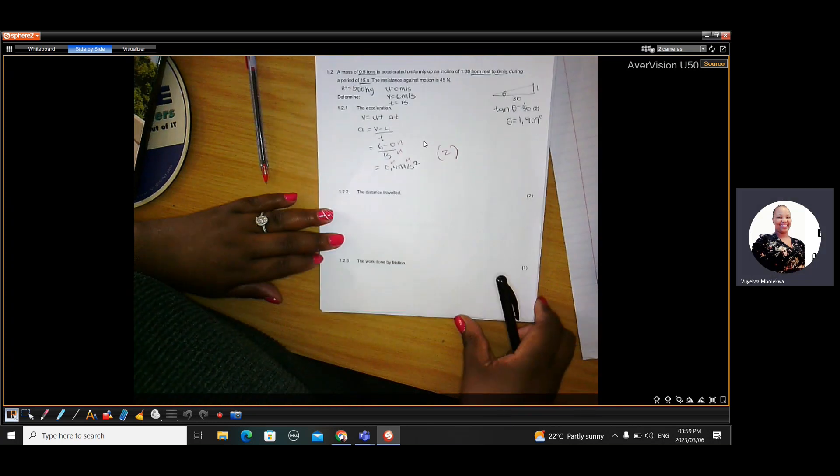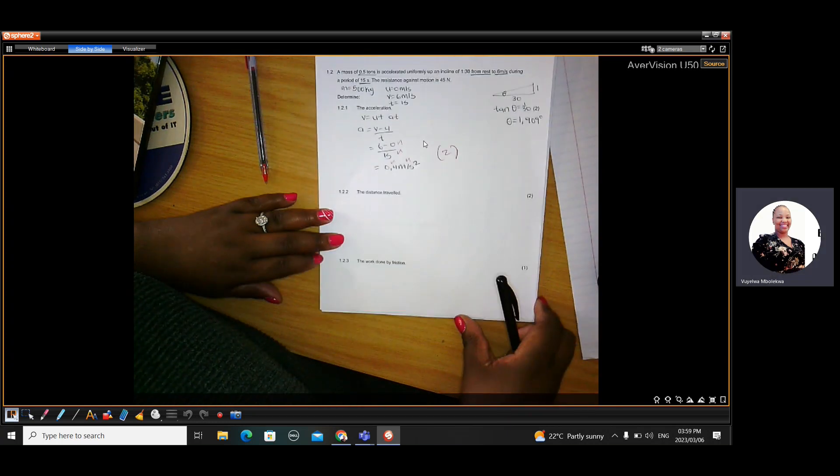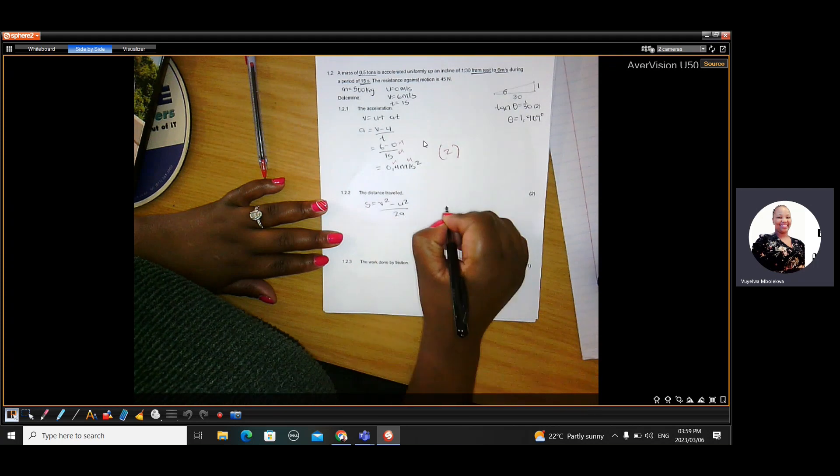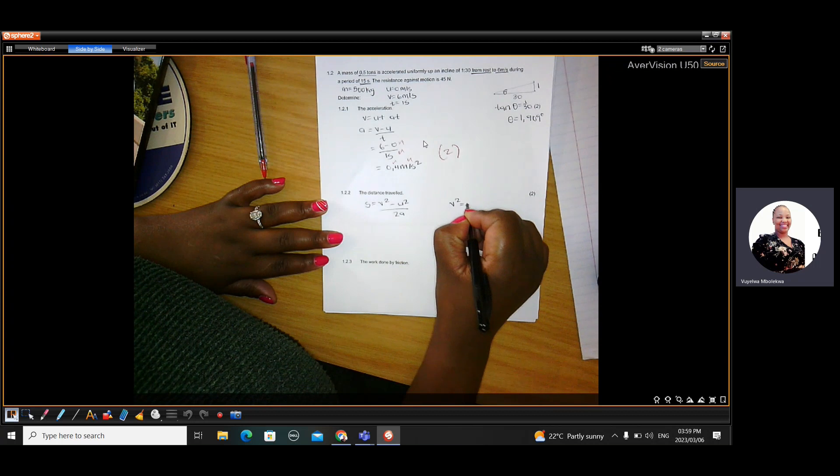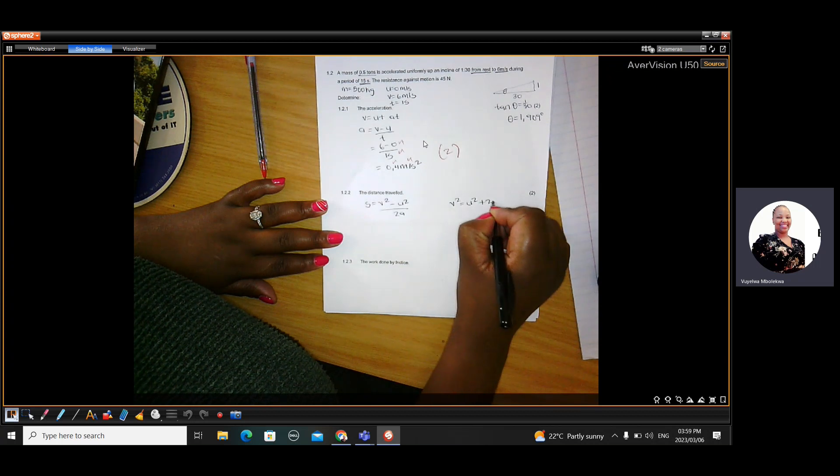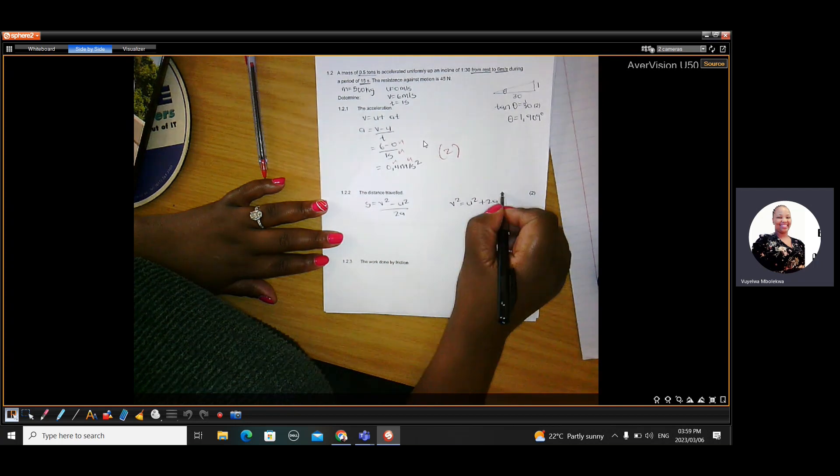The distance traveled. To calculate the distance, you could use the formula S is V squared minus U squared over 2A. But the original formula says V squared equals U squared plus 2AS. That's the original formula. Then from there, you make S subject of the formula.